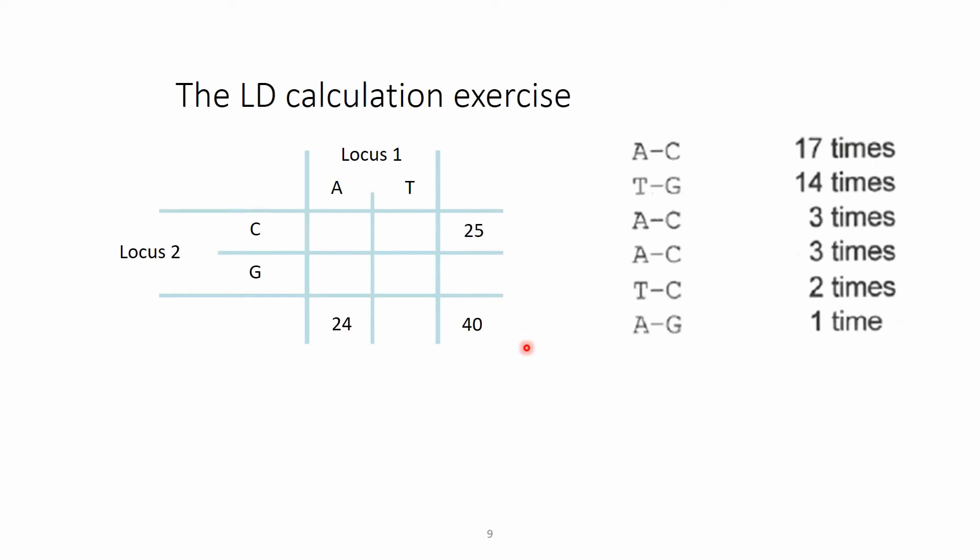The last thing we need to find out is how many times the A and C appear together. So here the A-C appear together, so we count this. We don't count this, but also A-C here, A-C here. Here although there is a C, there is not an A, so we don't count this part. And also here is an A, but there is a G here, so it's not an A-C combination, so also we don't count this. So basically we count this 17, this 3, and this 3, which is together 23.